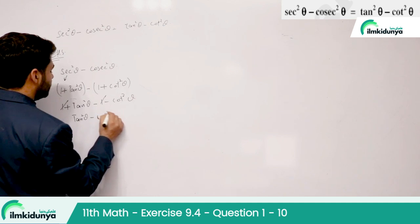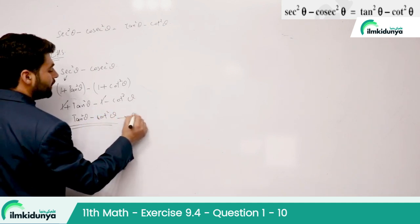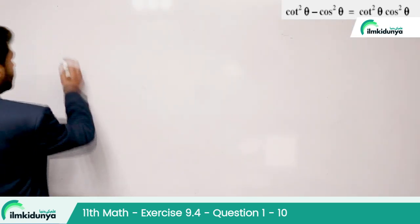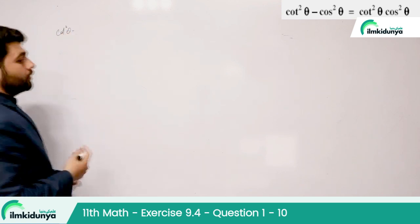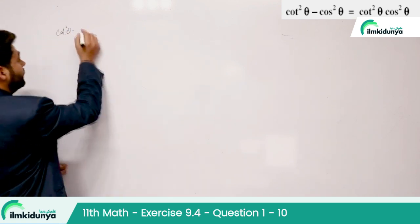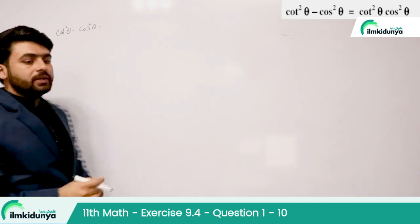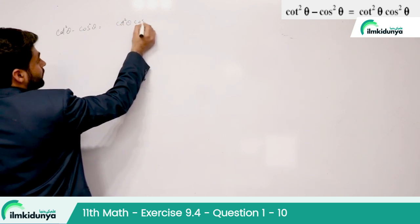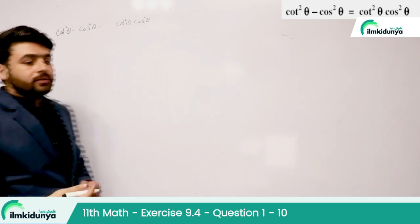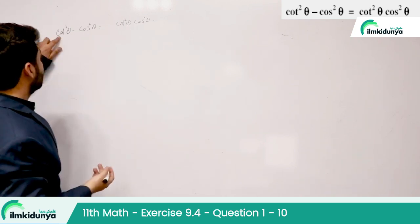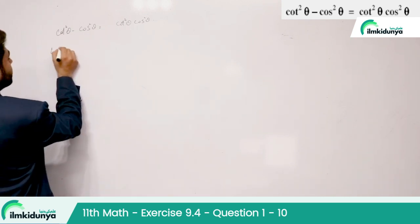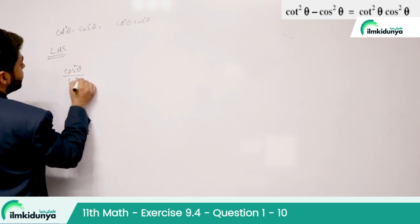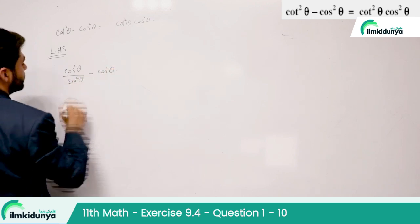Question number 6: cot² θ − cos² θ = cos² θ · cot² θ. These two terms on the right-hand side — cot² θ minus cos² θ. We start from the left-hand side and open cot² θ as cos² θ over sin² θ, then minus cos² θ.